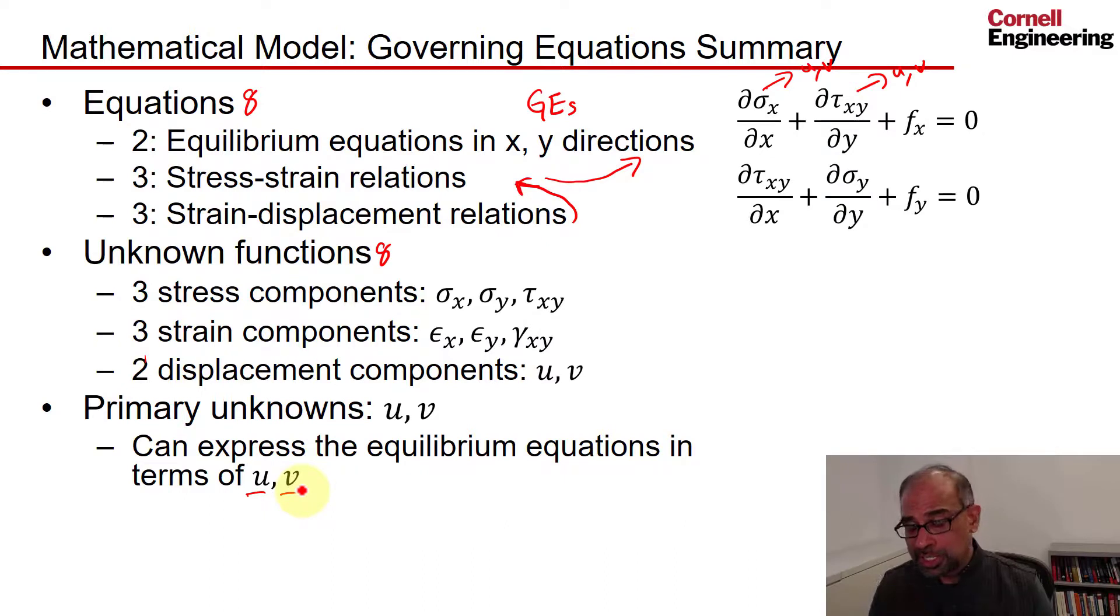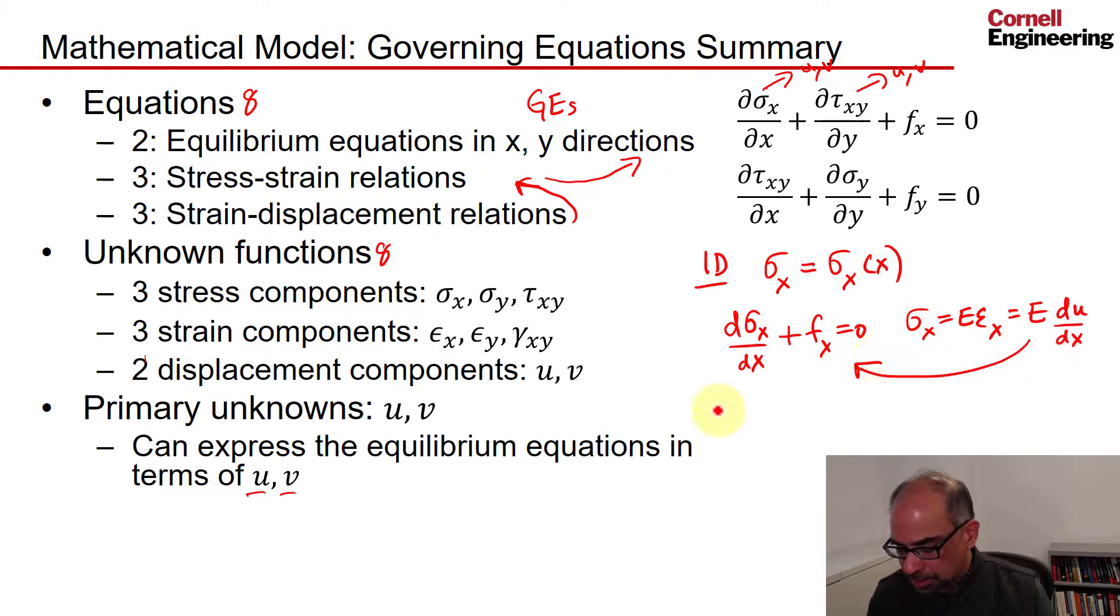Essentially, what I have are two second-order partial differential equations in two displacements, u and v. You can see this most readily by going to the 1D case, where you have only one stress component, sigma x, as a function of x. The equilibrium equation reduces to d sigma x dx plus fx equals zero. Using the stress-strain and strain-displacement relations, I'll get E d squared u dx squared plus fx equals zero. In the 1D case, I get one second-order ODE. In the 2D case, I would get two second-order PDEs in u and v.